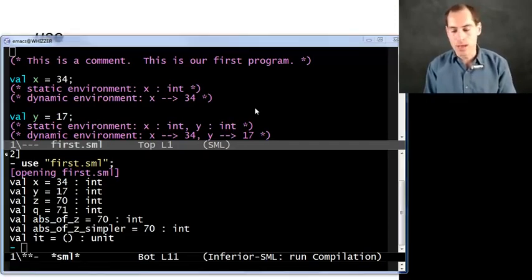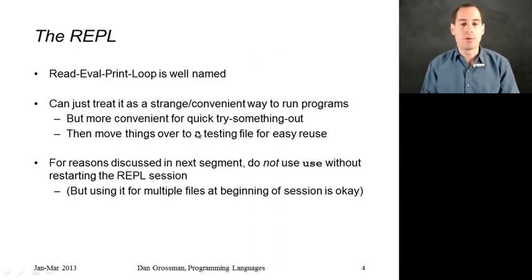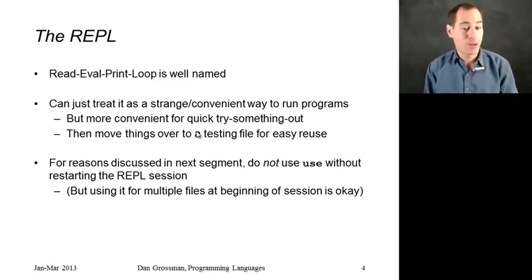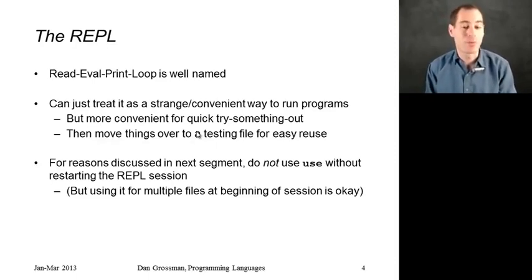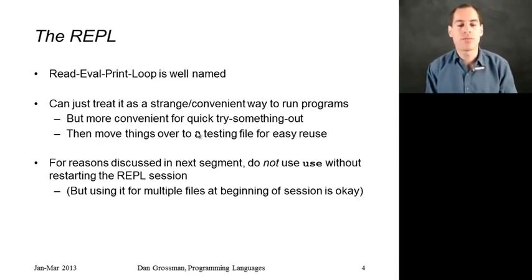When you look at it this way, what is actually going on is the meaning of our programs is that all we have is a REPL, and use is just a convenient way to use that REPL. REPL stands for read-eval-print loop, and it's actually pretty well named. What happens at that prompt when you type in a binding is it reads it, it evaluates it — although if it doesn't type check, it just gives you an error message. It prints the result, and then the loop part is about how it gives you another prompt back so that you can continue.